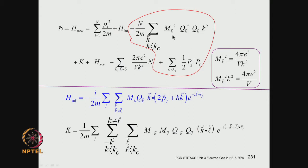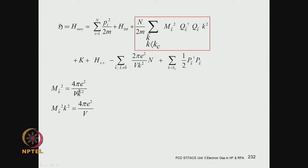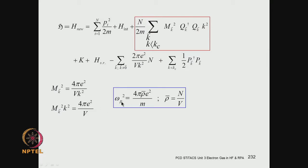Here, we have used mk². So this is mk². There is also a k² here. So mk² × k² is nothing but 4πe²/V. Together they will give you the plasma frequency — a frequency of oscillation. So, mk²k² is 4πe²/V, which means that the plasma frequency ω² = 4πρe²/m, because ρ̄ is nothing but n/V. So n is coming here, 1/V is coming from mk². So 4πρ̄e²/m gives you the square of the plasma frequency.